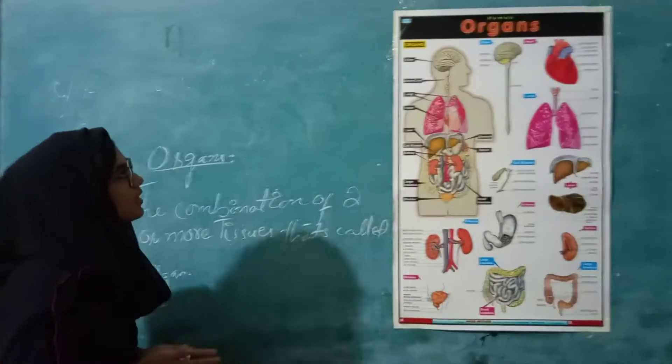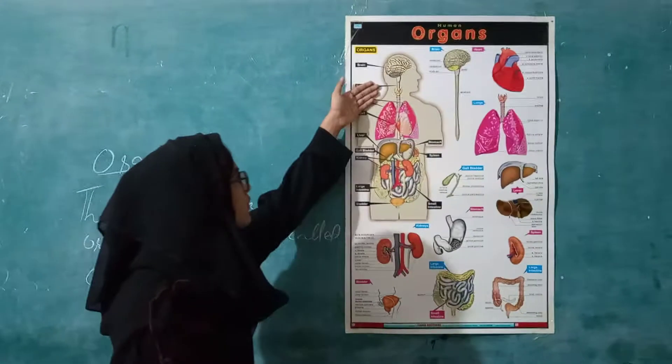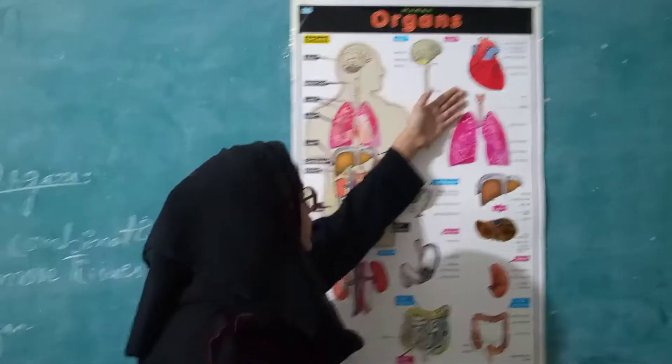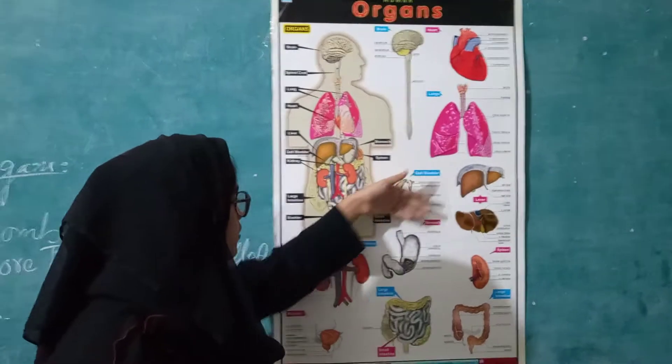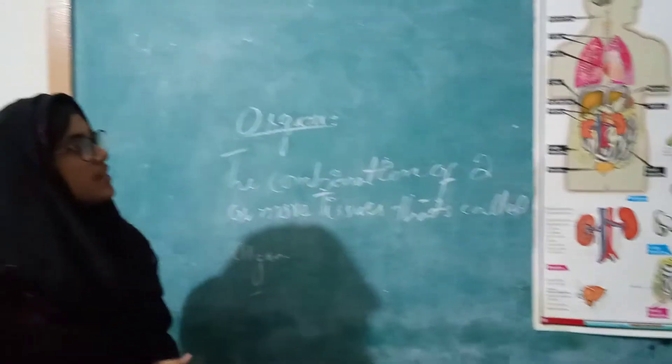In our body there are organs like brain, heart, lungs, liver, stomach, spleen, and intestines. So what is brain?